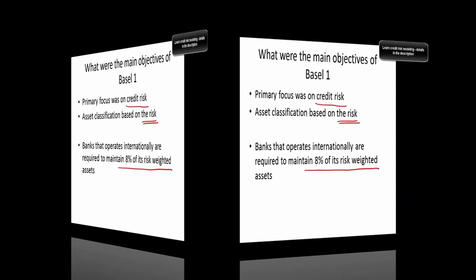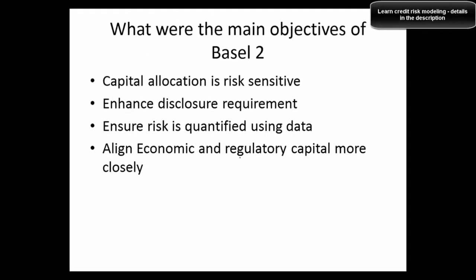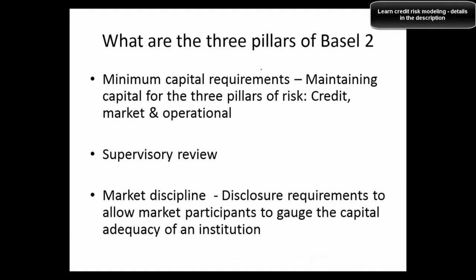What are the main objectives of Basel 2? Capital allocation is risk-sensitive — something recognized in much more detail than Basel 1. It also emphasized enhancing disclosure requirements, something missing in Basel 1. It tried to ensure that risk is quantified using data, which wasn't given much importance in Basel 1. It also ensured that everything aligned with economic and regulatory capital more closely.